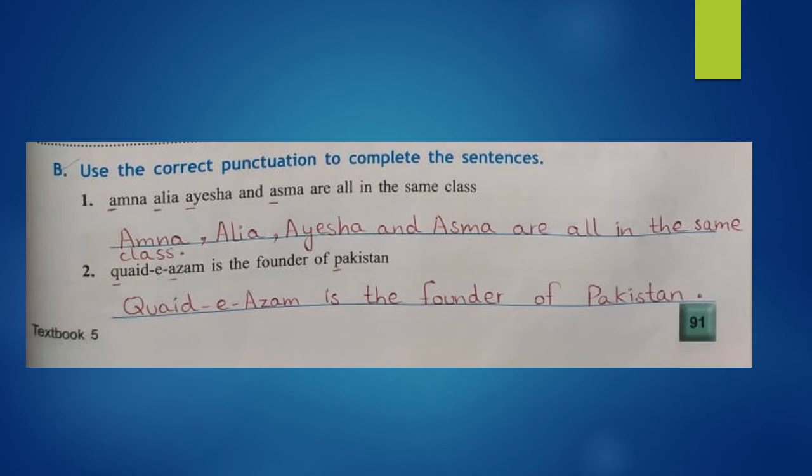Now come to Exercise B on page number 91. Use the correct punctuation to complete the sentences. Number one: Amna, Alia, Aisha, and Asma are all in the same class. These are proper nouns, so capitalize the first letter of each name and put a full stop at the end. Number two: Quaid-e-Azam is the founder of Pakistan. Quaid-e-Azam and Pakistan are proper nouns — capitalize their first letters and put a full stop at the end.